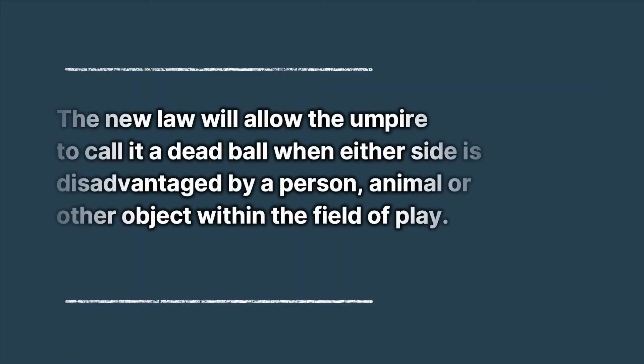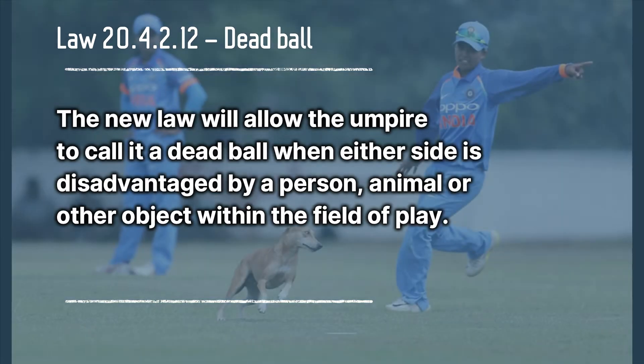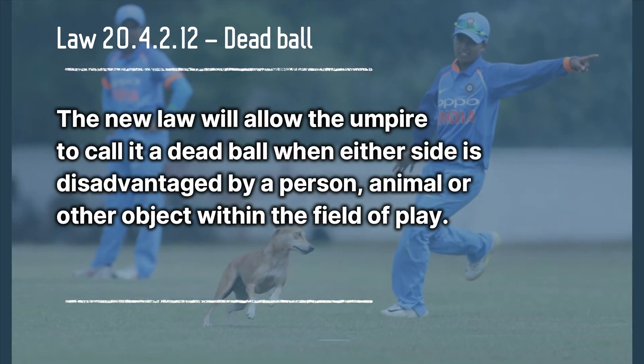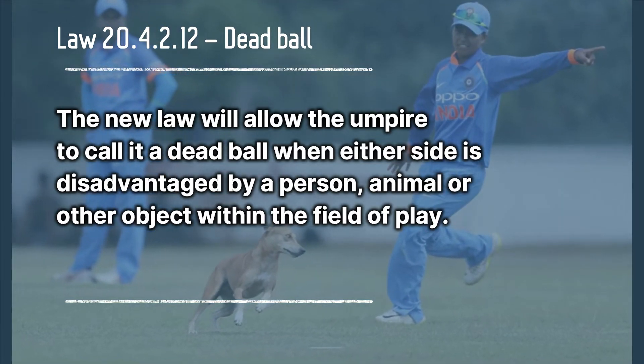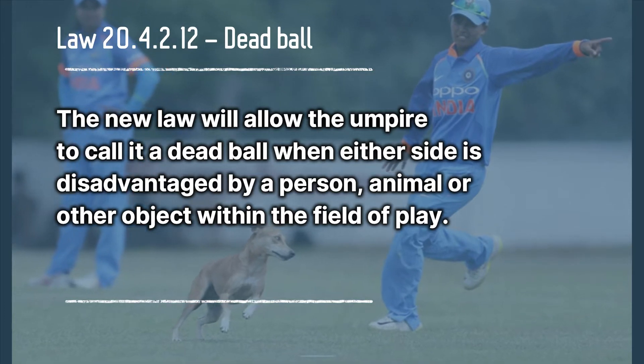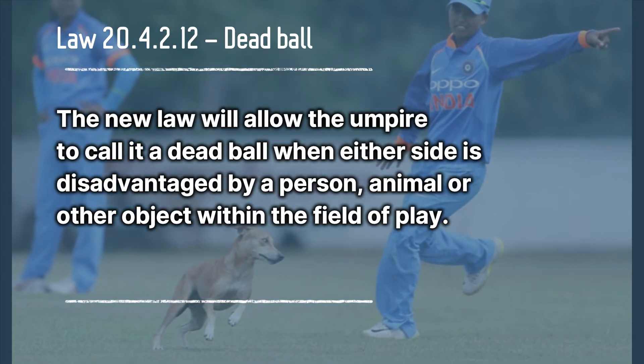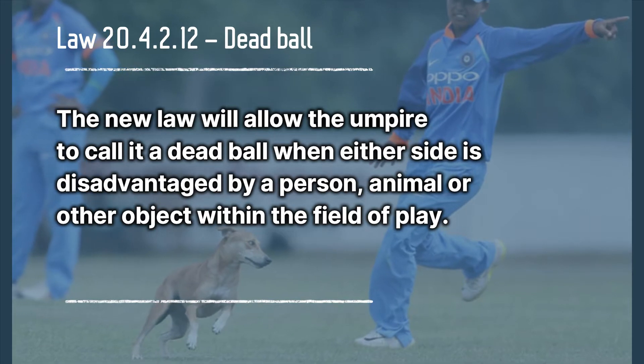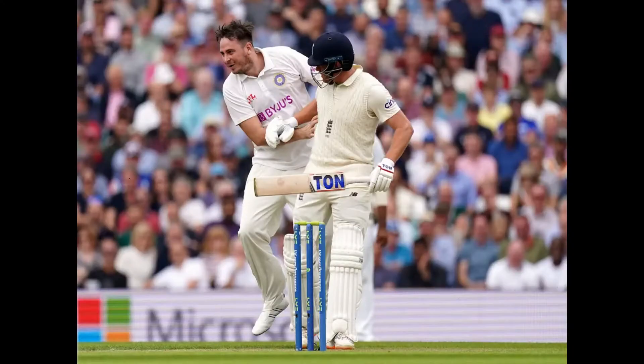Law 20.4.2.12: Dead Ball. The new law will allow the umpire to call a dead ball when either side is disadvantaged by a person, animal, or other object within the field of play. Earlier, it was considered a legal delivery when a run, boundary, or wicket was taken just before the interference. But now, according to the new law, the ball will be called a dead ball.